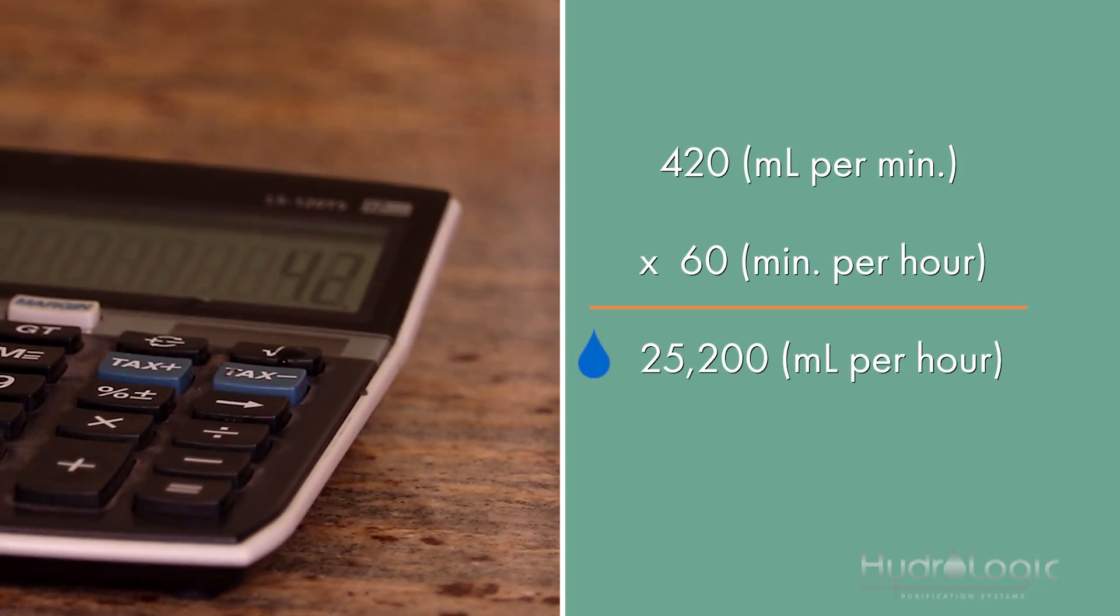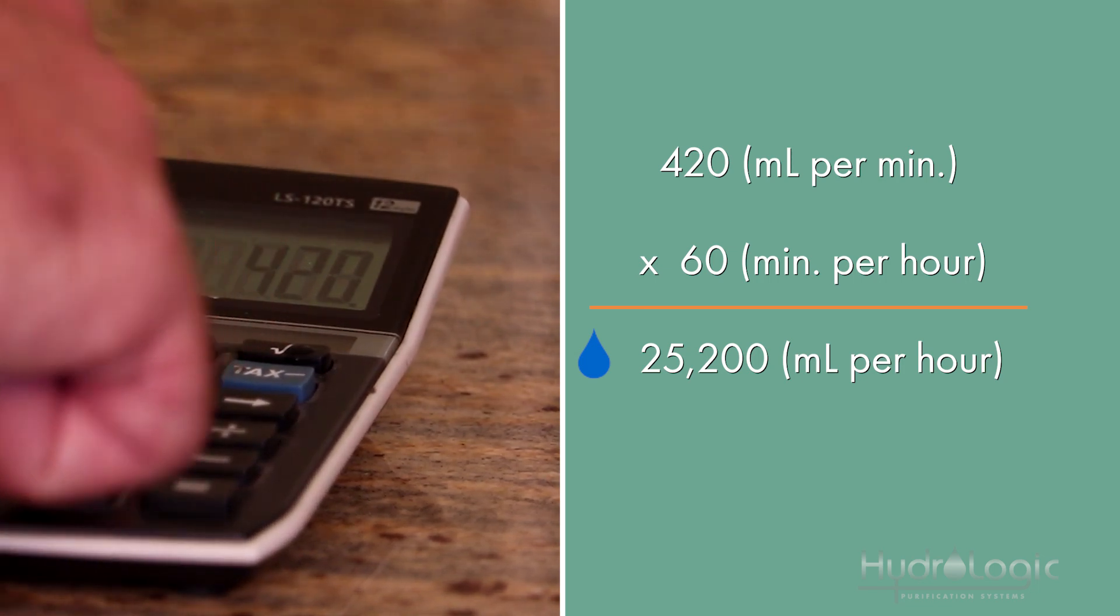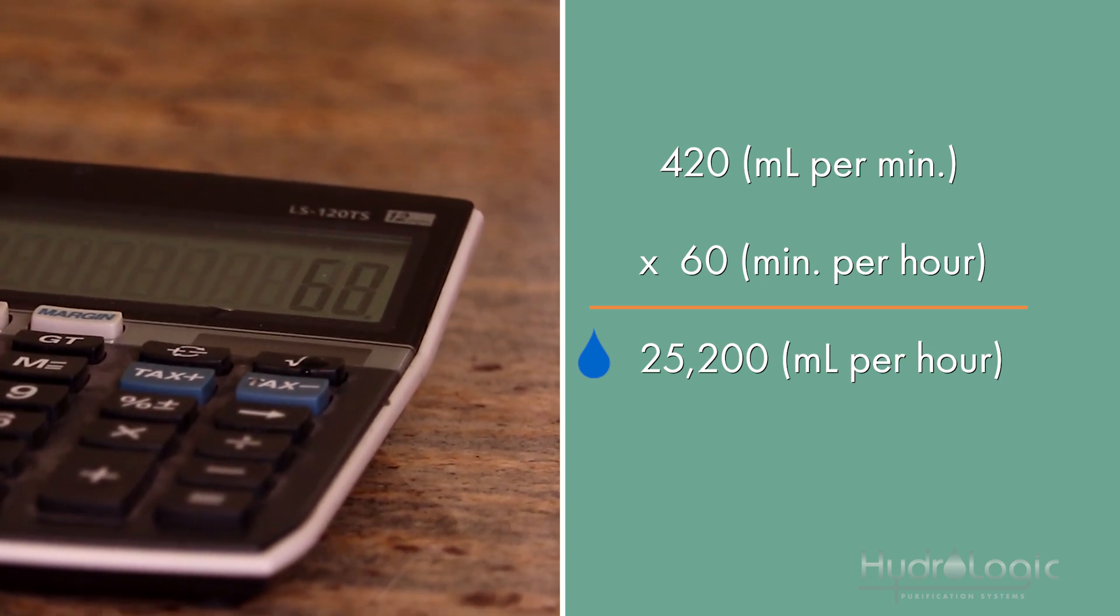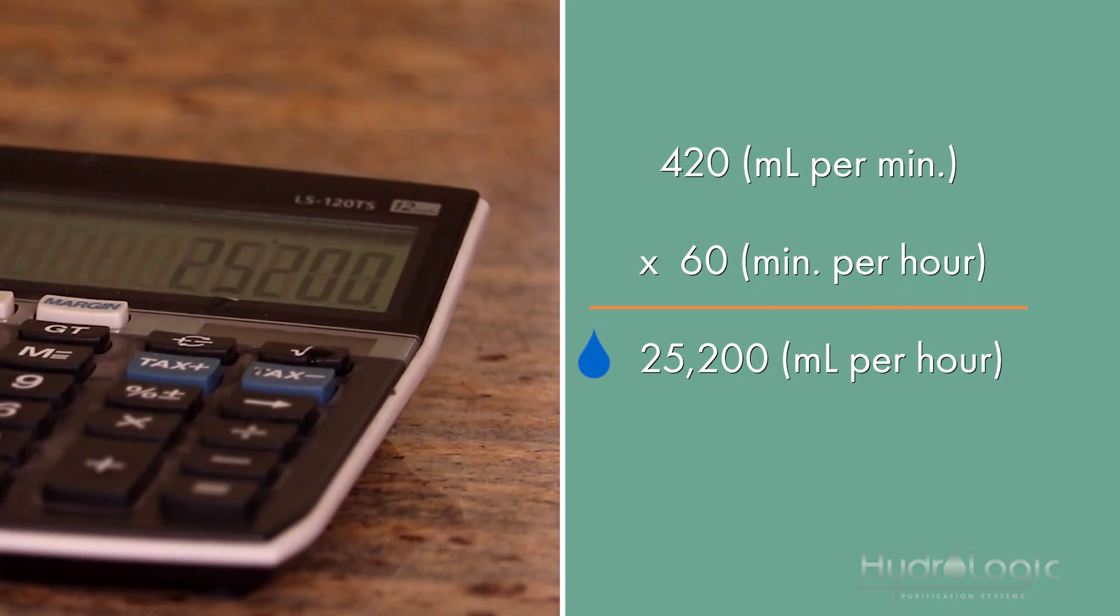But we want to convert that to hours. Let's take 420 and multiply that times 60, 60 minutes in an hour. That gives us 25,200 milliliters in an hour.